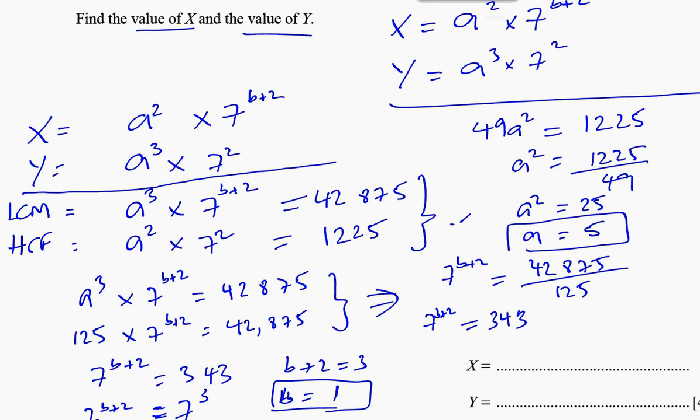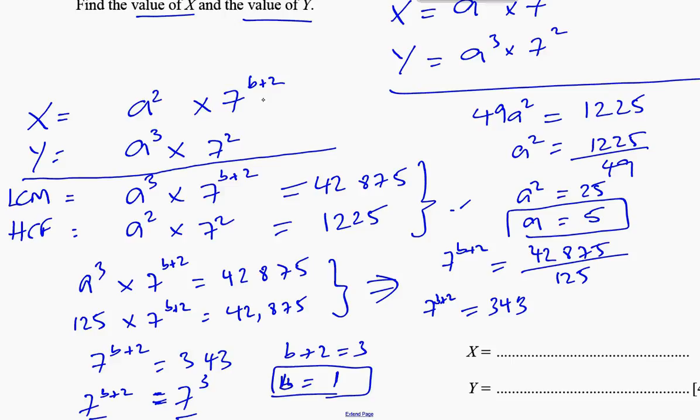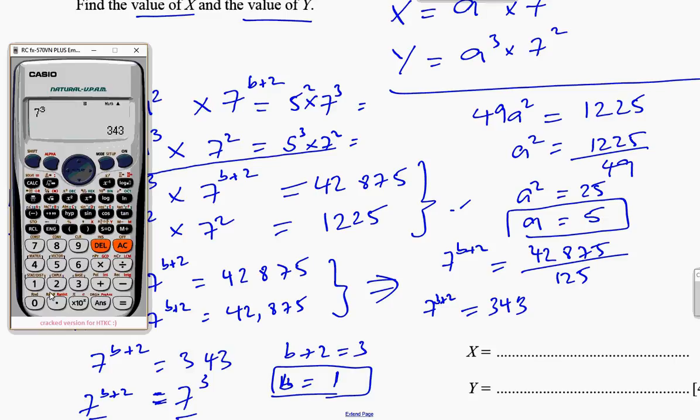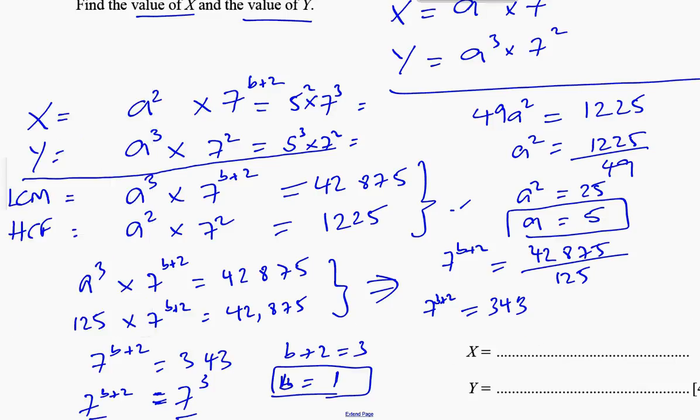So it's 5² times 7³ for X. That's going to be 25 times 343. You can use that 343 already, times 25, that gives us 8,575 is going to be our X.